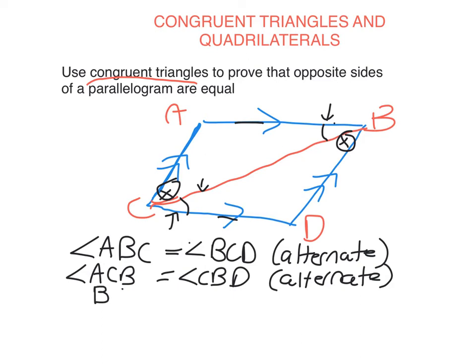So it must be the same length in both triangles. The way we can write this, BC, which is the transversal, is common. It is in both triangles, therefore it's equal in both triangles.